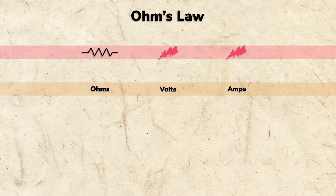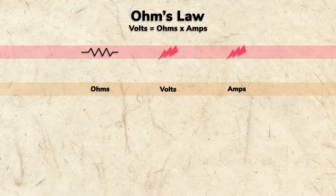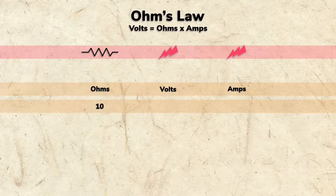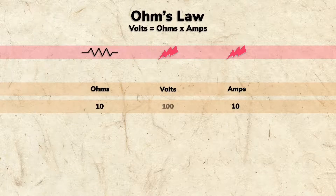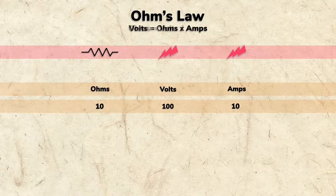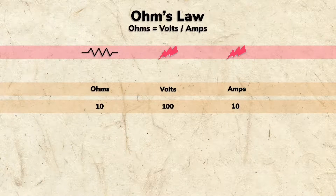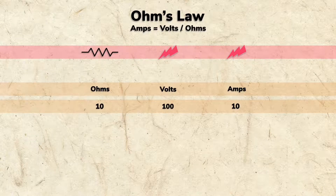Ohm's law states that volts equals ohms times amps. So, 10 ohms and 10 amps equals 100 volts. The formula can be rearranged, stating that ohms equals volts divided by amps, or that amps equals volts divided by ohms.